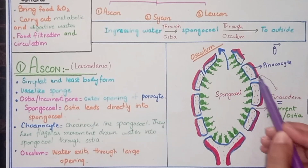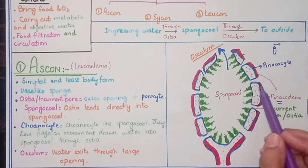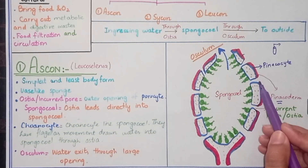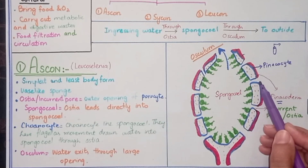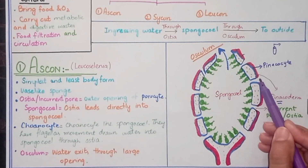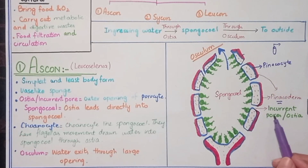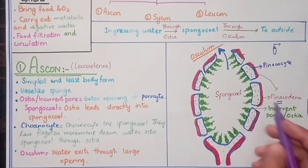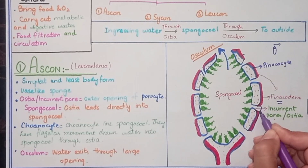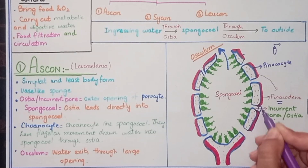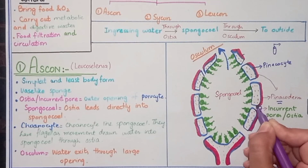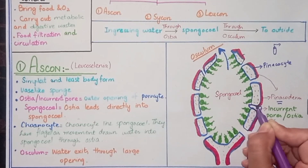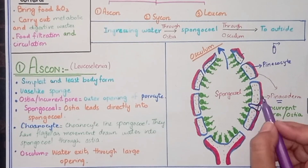Water entry is carried out through pores which are known as incurrent pores or Ostea. These pores are present in the Pinacoderm, and the cells forming these pores are known as Porocytes.